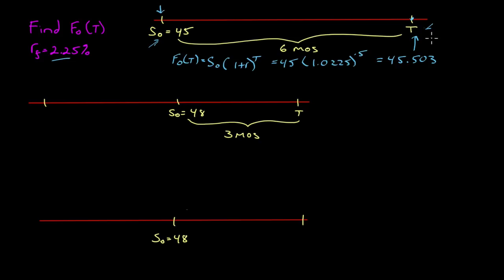This is where candidates start to get a little concerned. They read the question and say, where do I start? Well, this is just a timeline. Think about it as where are the dollars on this timeline. We're here with $48. We know the dollar value over there is $45.503. We can't compare dollar values at different points in time. We must either bring $48 forward and compare, or bring $45.503 back and compare. We're going to do it both ways and show that no matter which way you go, you get the same answer.